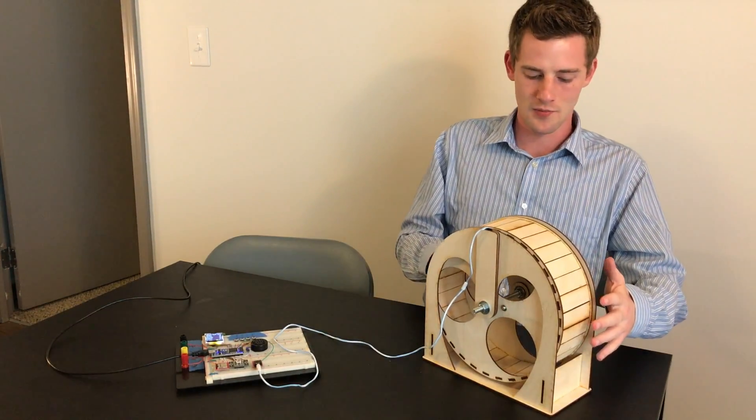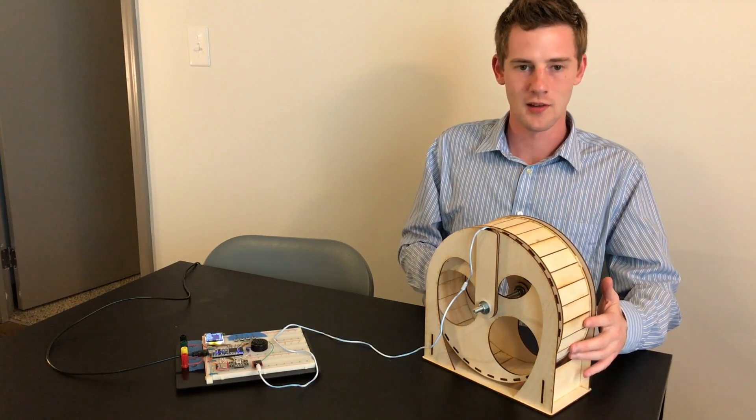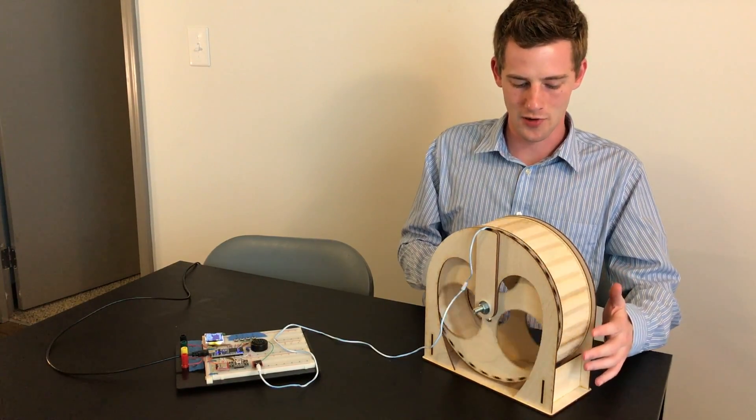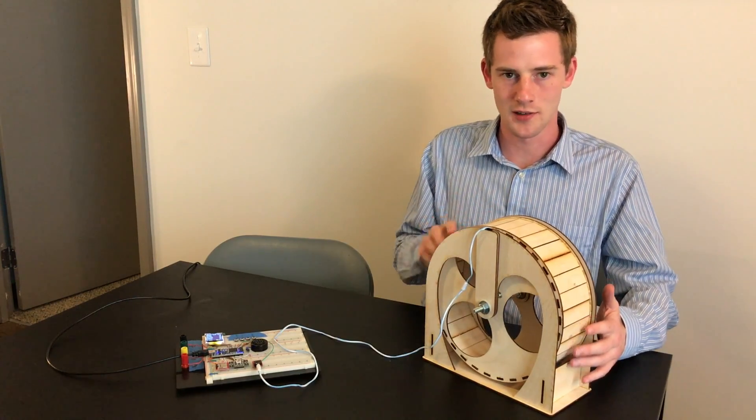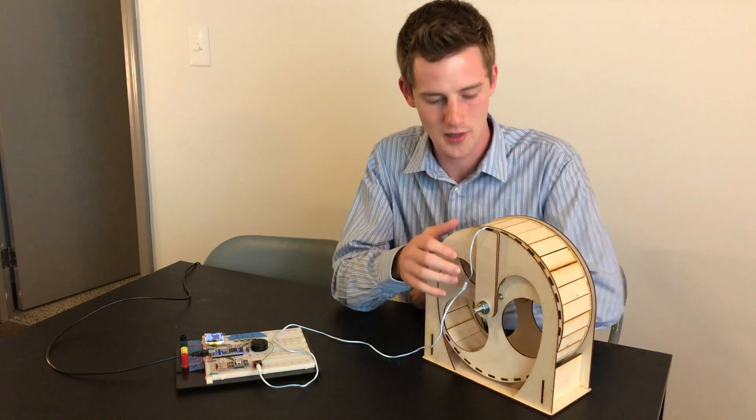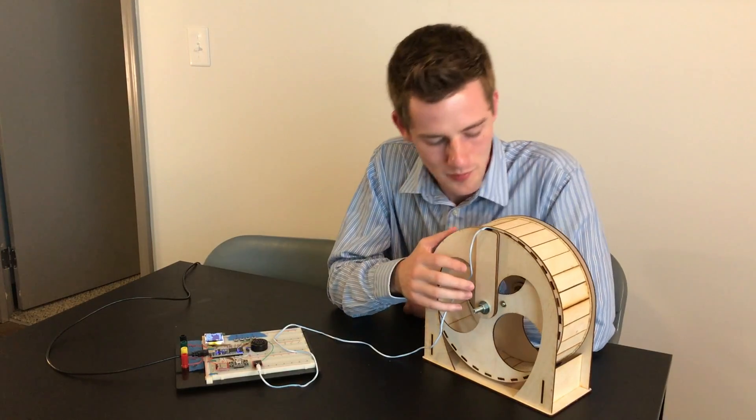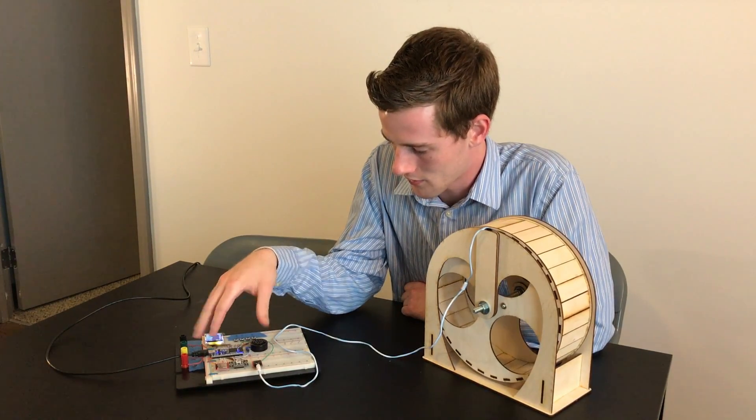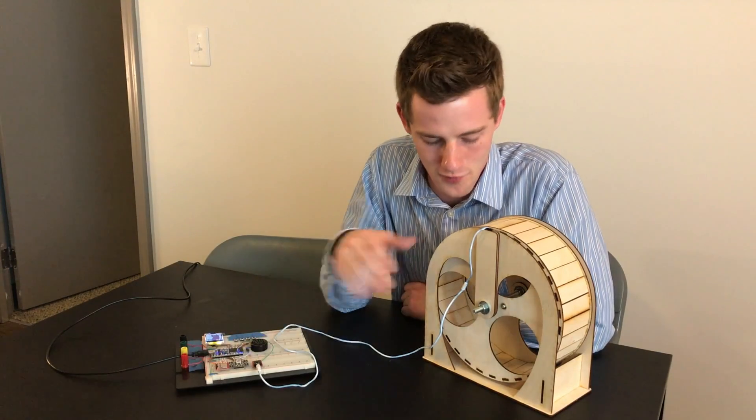Basically you need the condition where most of the time when the wheel's rotating the switch is open and only for a little while as the magnet passes the switch is closed allowing the current to flow. And that will be like a boolean value on for the embed.